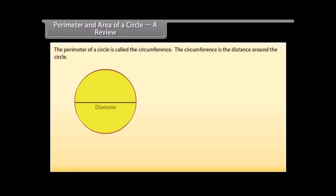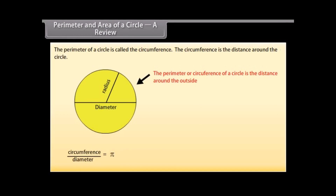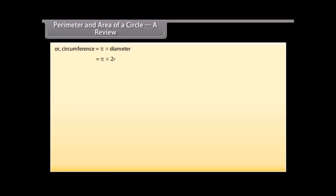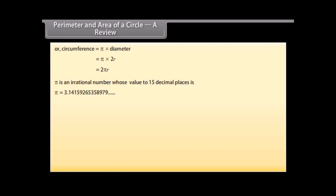Perimeter and area of a circle — a review. The perimeter of a circle is called the circumference. The circumference is the distance around the circle. The ratio of circumference to its diameter is constant, denoted by PI. Circumference equals PI times diameter, which equals PI times 2R, or 2πR. PI is an irrational number whose value to 15 decimal places is 3.14159265358979. We usually say PI is approximately equal to 3.14.